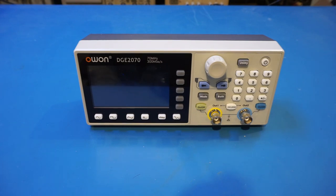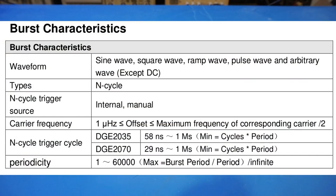Another feature on the 2070 that you don't find on the 962E is its burst mode. We will take a look at this mode later as well.